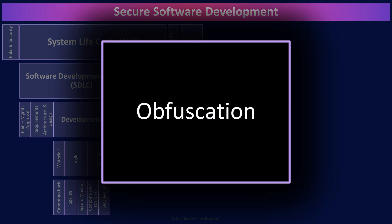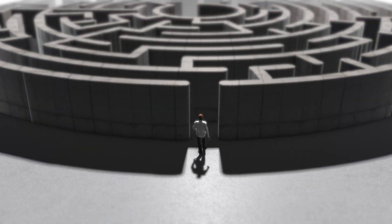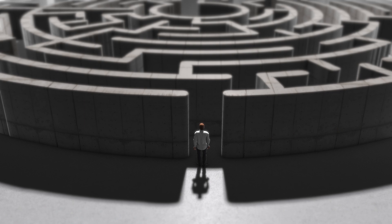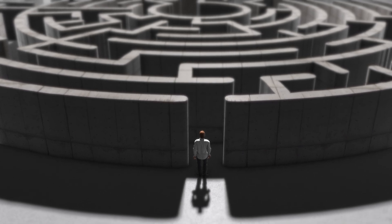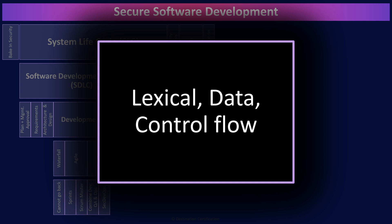Code obfuscation is the deliberate act of creating code that is difficult for humans to understand — to make code more difficult to reverse engineer and conceal the purpose of the code. It is used when we don't want unauthorized people to understand how our code works and what it does. There are three major methods: lexical obfuscation modifies the look of the code, changing comments, removing debugging information, and changing the format of the code — the easiest but weakest form. Data obfuscation modifies the data structure, use of variables, arrays, etc. And control flow modifies the flow of control through the code, reordering statements, methods, loops, and creating irrelevant conditional statements.